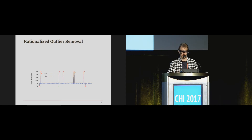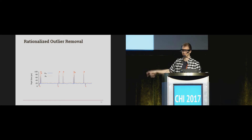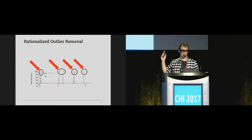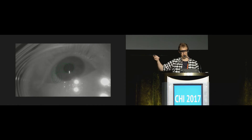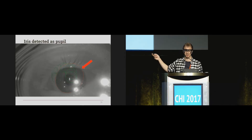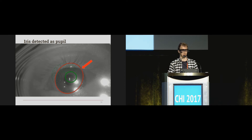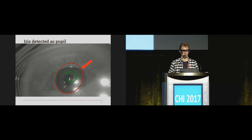I'll show a couple of examples of outlier removal. The first is based on pupil size. You can see the pupil size signal — the width and height — and there are some clear outliers. This removal is based on subsequent pupil size: for instance, the iris occasionally gets detected as the pupil. The previous pupil has one size, and the newly detected one is much larger — clearly not behaving according to the constraints of the human pupil. It's clearly separable by a single threshold, and this is how we identify these outliers.